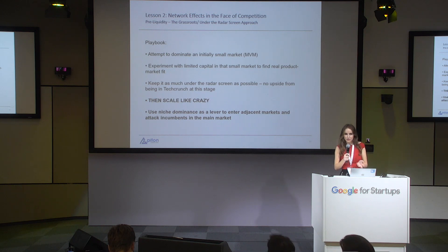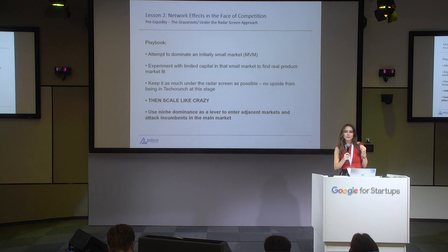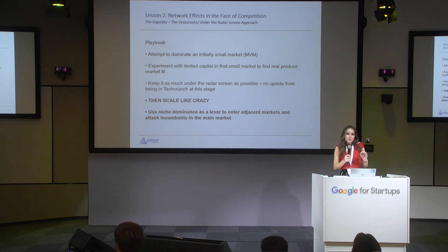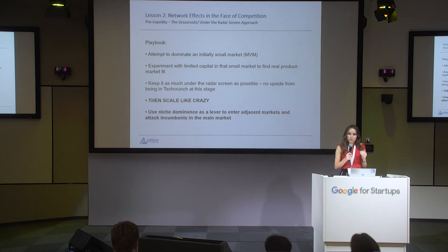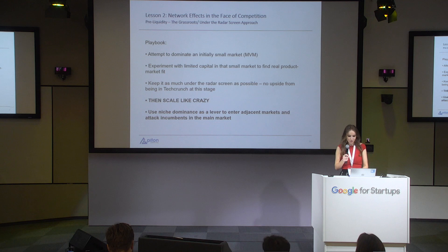Here's a summary of the playbook for the grassroots, under-the-radar approach: attempt to dominate your initial small niche or MVM; experiment with little capital in that niche — you'll probably be alone there anyway until you find real product-market fit; keep it as much under the radar as possible, there's no upside in being on TechCrunch right now; once you have real product-market fit, scale like crazy; and once you have dominance in that small niche, use it as a wedge to go into an adjacent market and own the whole thing.